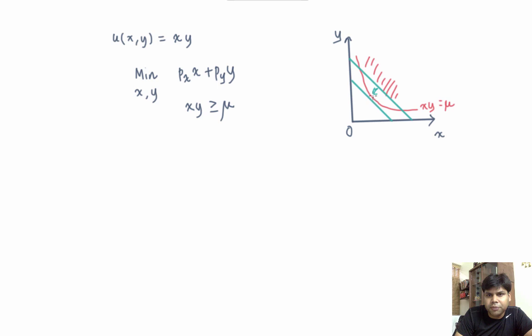Now, this seems to give us a solution here. The solution again will have this property that the slope of the iso-expenditure curve is equal to the slope of the indifference curve.